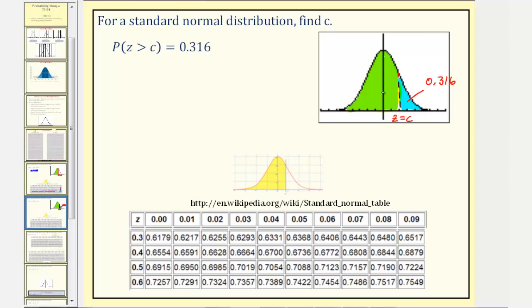And since the total area is equal to one, this area is going to be one minus 0.316, which equals 0.684. So now we can go to the cumulative Z-score table and look for this probability, or this area.